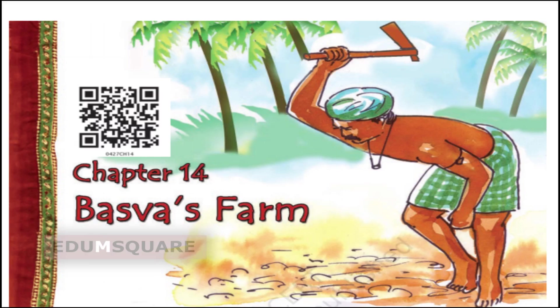India is the land of agriculture. Two-thirds of people in India are farmers. Farmers grow different types of crops. Do you know what farmers do to grow the crops? There are different steps and processes involved in growing the crops.